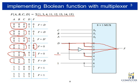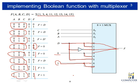Input five has the expected function equal to D, so D is connected again for input five. For inputs six and seven, the expected function output is always one, so we connect constant one to inputs six and seven. In this way we implement a four-variable Boolean function using an eight-by-one multiplexer.